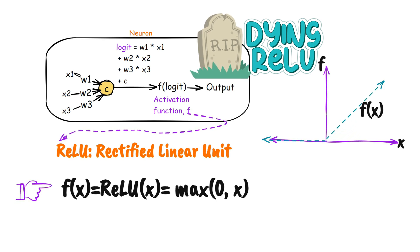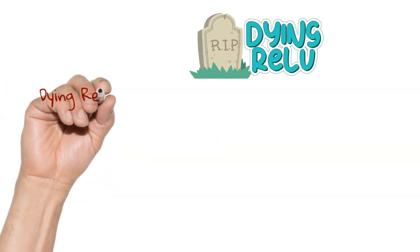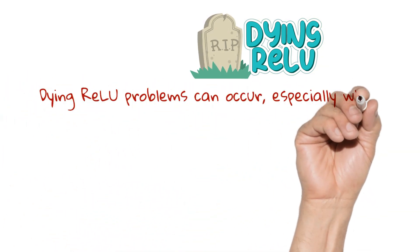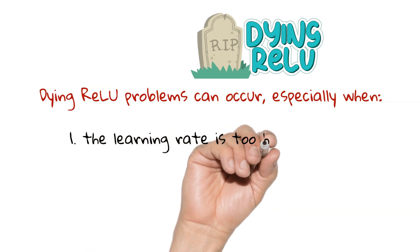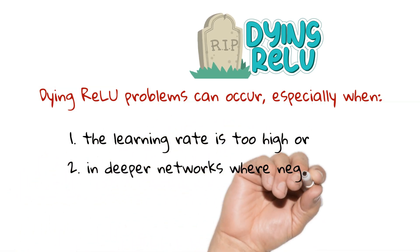Once a neuron with ReLU enters this dead state, it may continue outputting zero regardless of the input, causing the neuron to die and not contribute to the learning process anymore. This can happen especially when the learning rate is too high or in deeper networks where negative values are frequent.